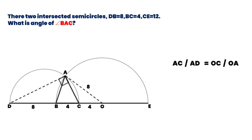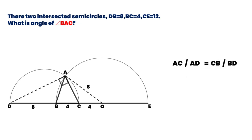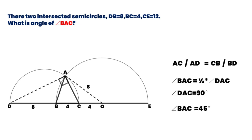They have a common angle AOD, so these two triangles are similar. We can get AC over AD is equal to OC over OA, that's 4 over 8. In triangle ACD, CB over BD is equal to 4 over 8. So AC over AD equals CB over BD. By the angle bisector principle, AB is the angle bisector of angle DAC. So angle BAC is equal to half of angle DAC. DAC is equal to 90 degrees, so angle BAC is equal to 45 degrees.